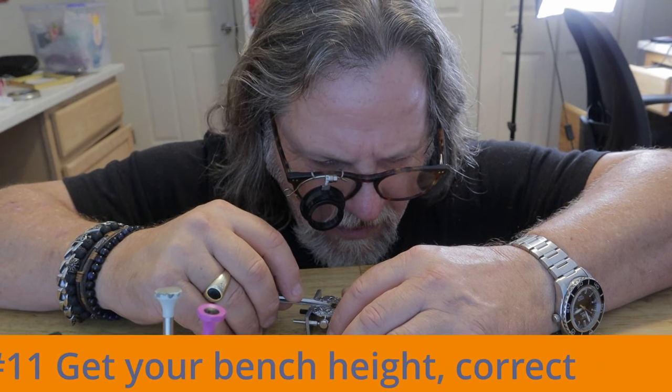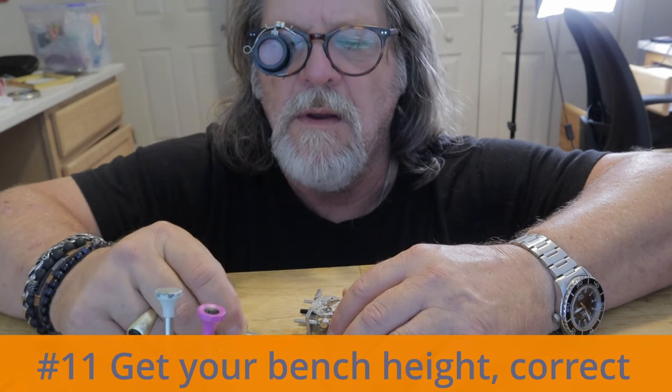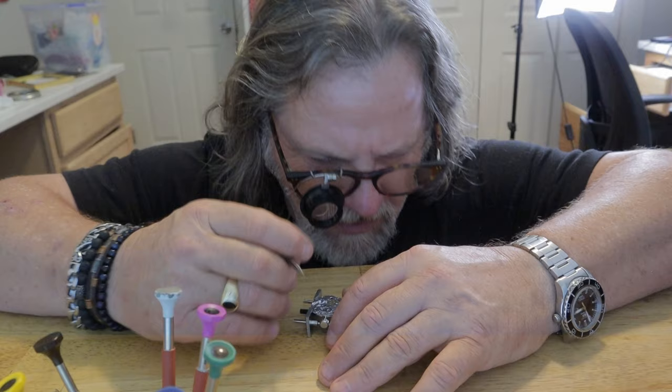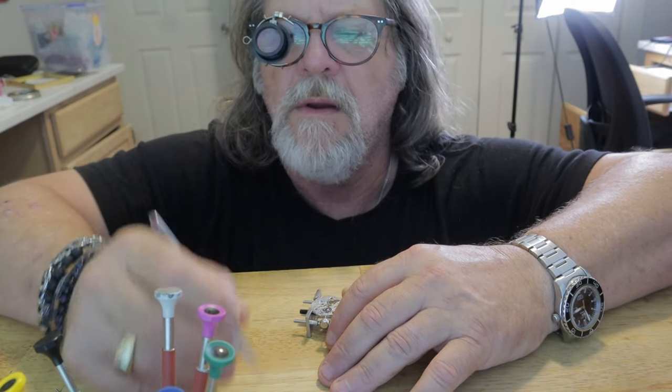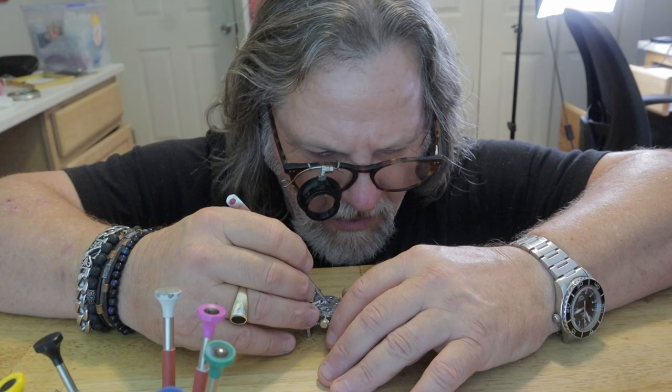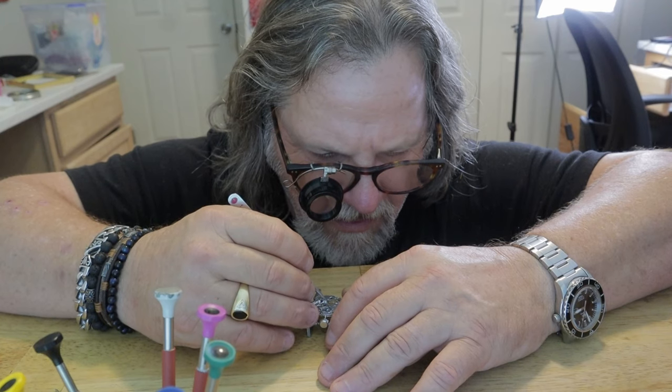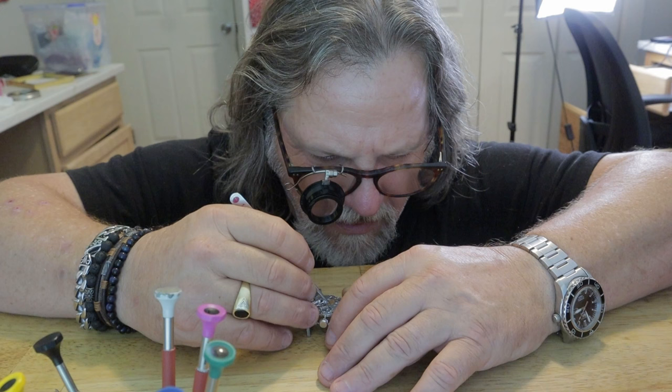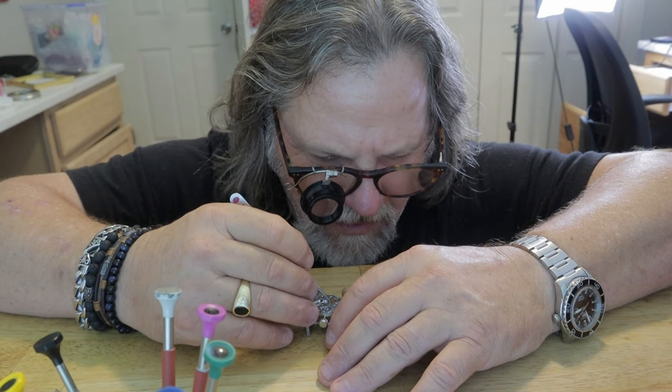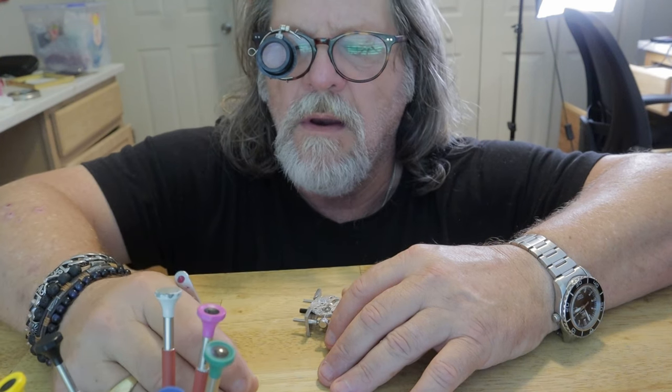The ideal bench height when you're using a loupe is just below your shoulder level when you're sitting in a chair. If you have to crouch or bend over the top of the movement, that's going to lead to you becoming uncomfortable and it's probably going to make you start working faster than you really should, which is going to lead to mistakes.